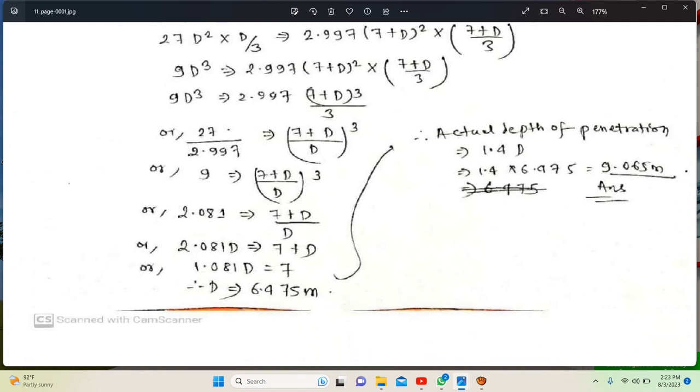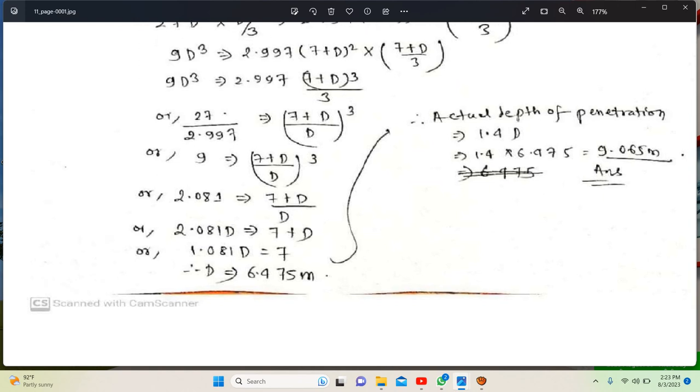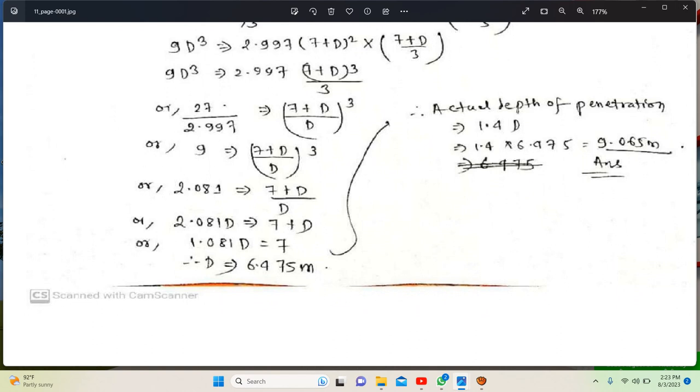9.01 equals 7 plus d over d. Therefore, d squared times 2.081 equals 7 plus d. Solving: 2.081d equals 7 plus d, which gives 1.081d equals 7, so d equals 6.475 meters.